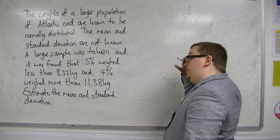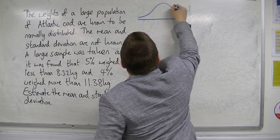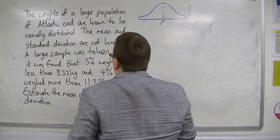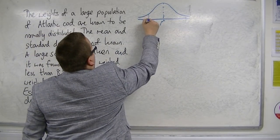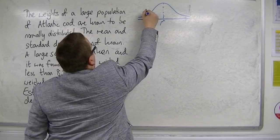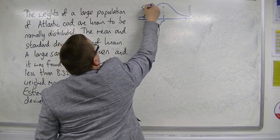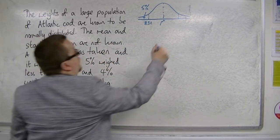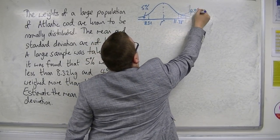If we draw ourselves a little diagram just to see exactly what's going on here, there is this unknown mean, but we know that at 8.32 this would be 5% of the population, and at 11.38 this would be 4% of the population.